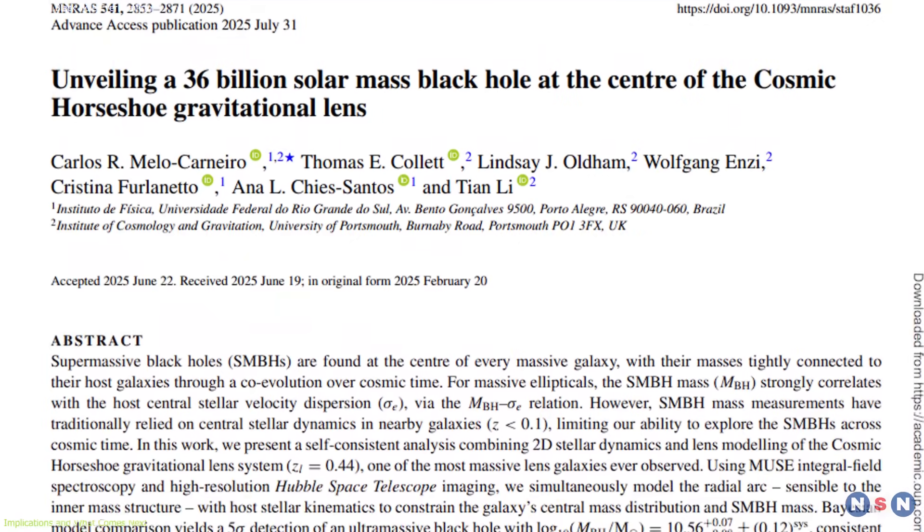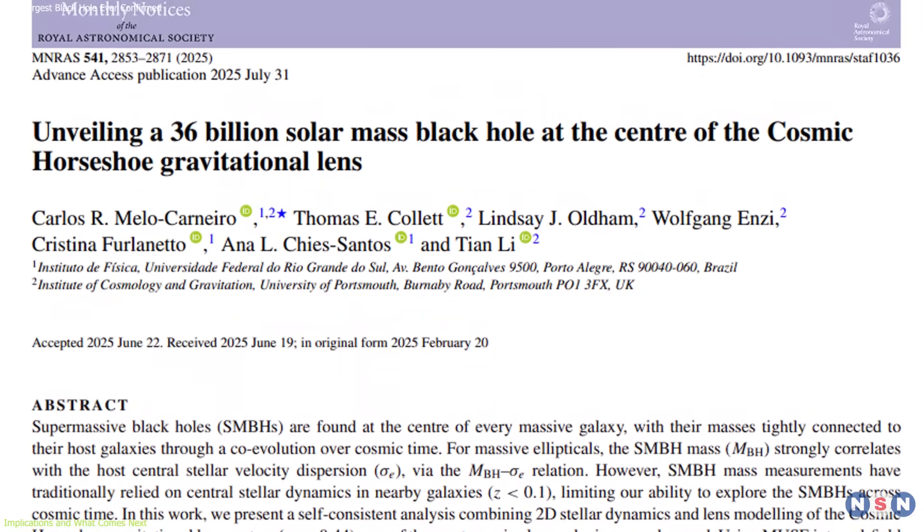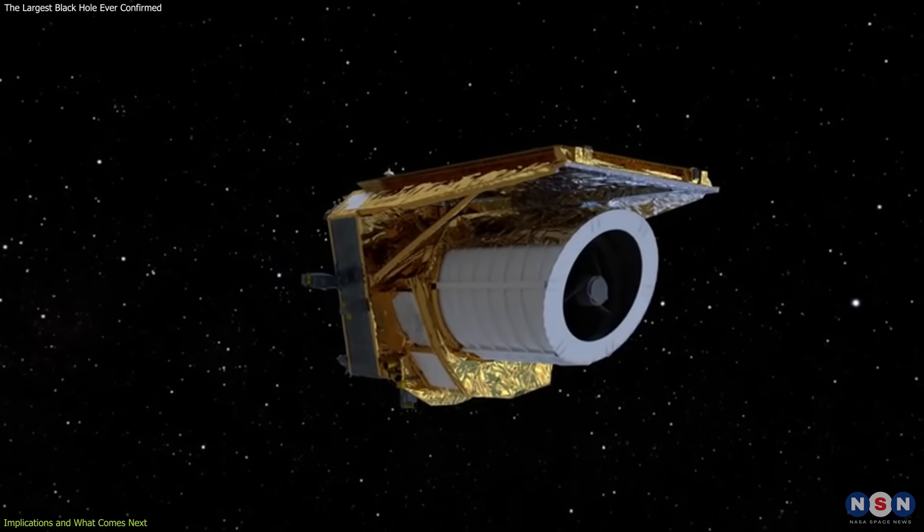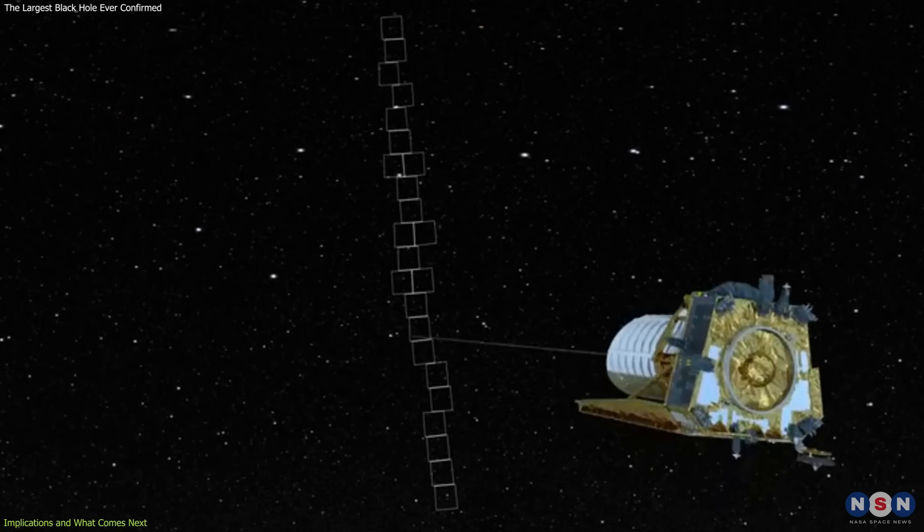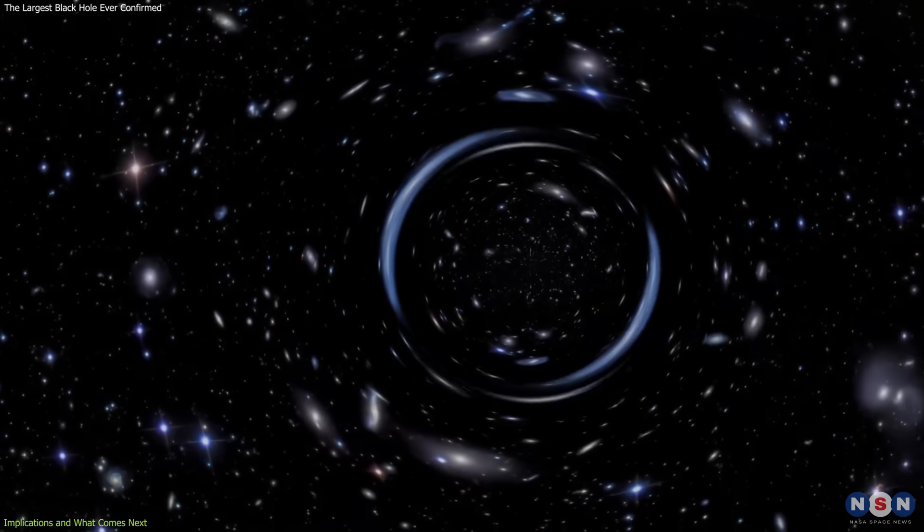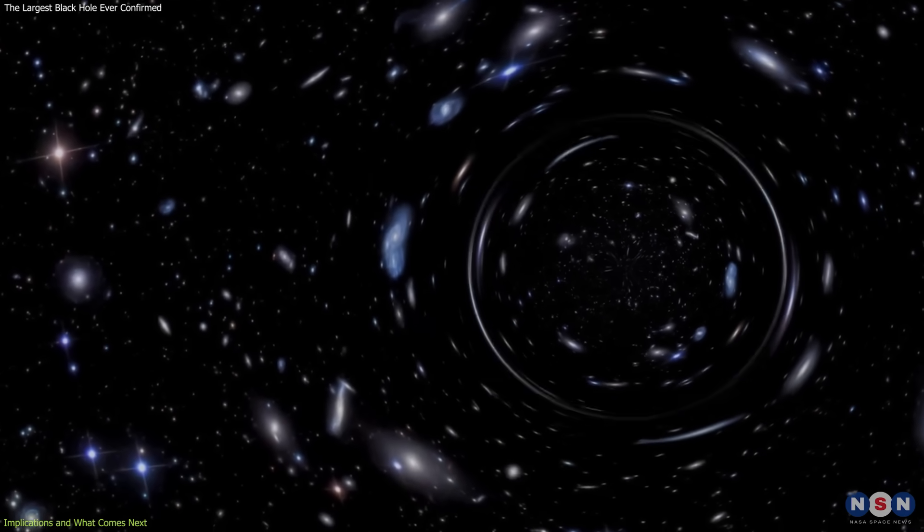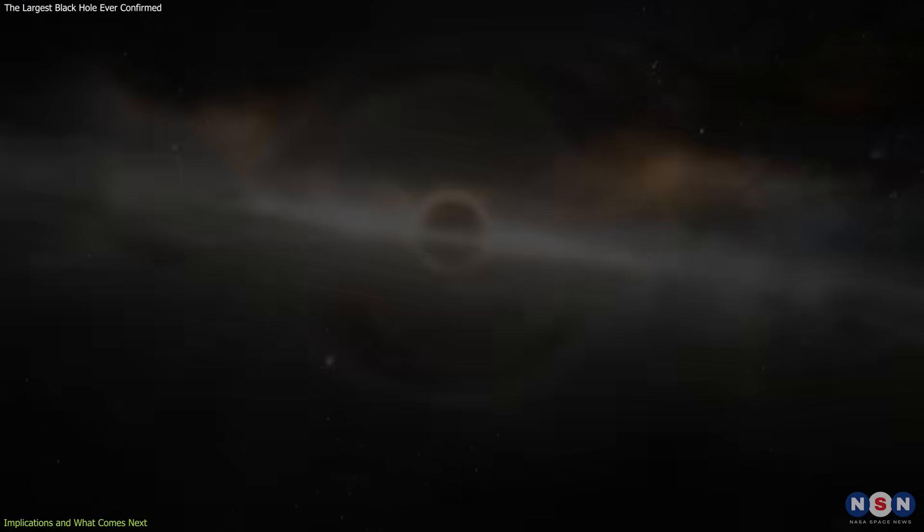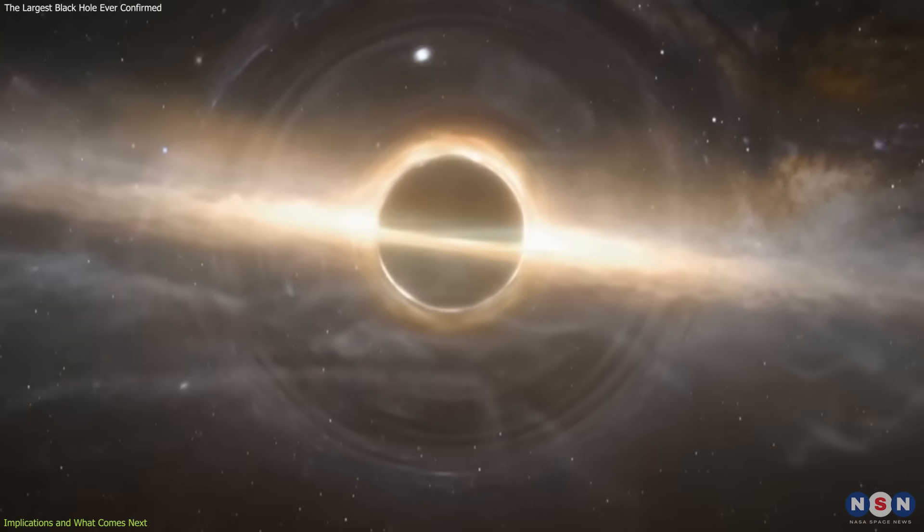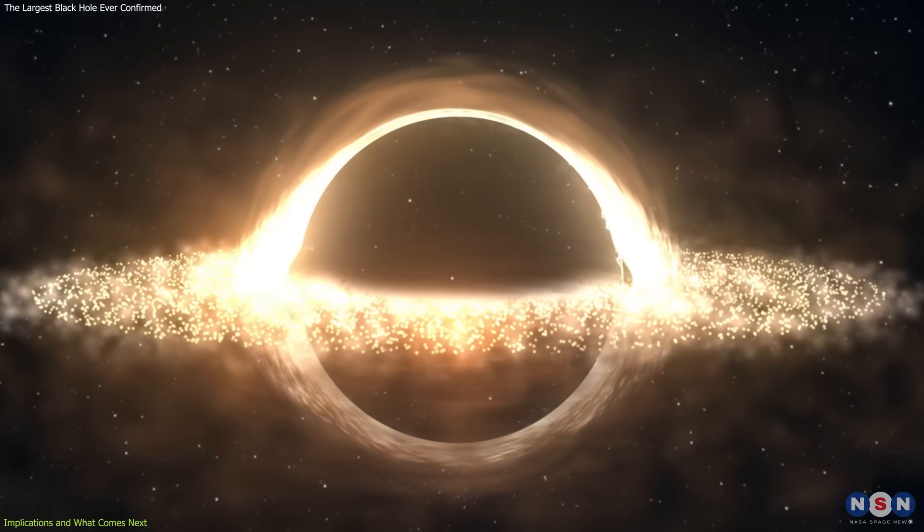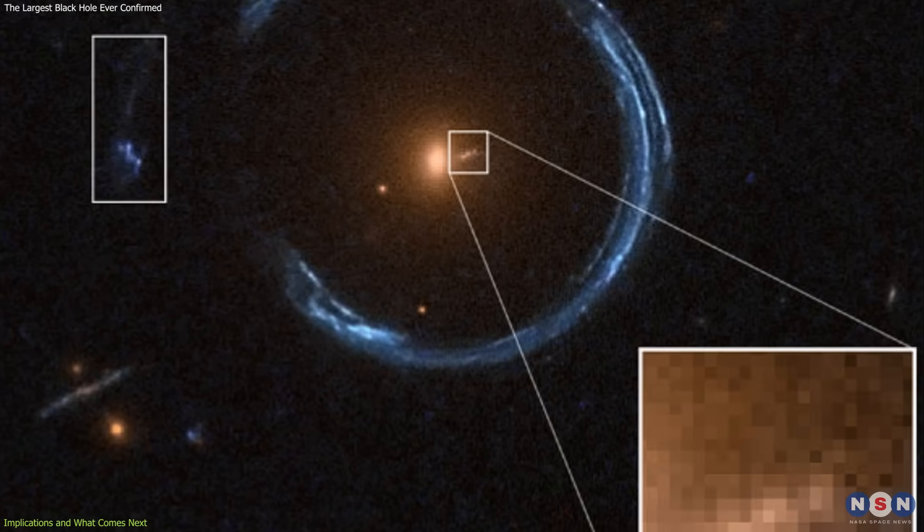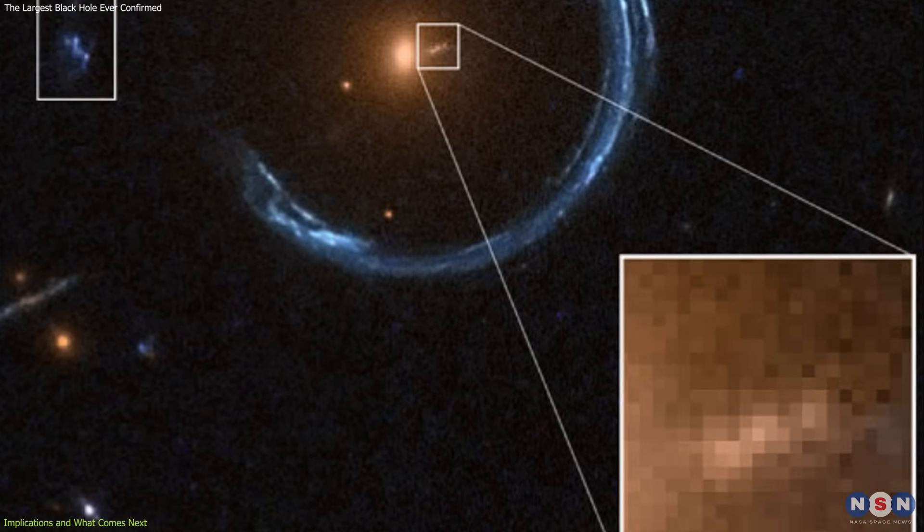Third, the discovery sets the stage for future surveys. The European Space Agency's Euclid mission, launched in 2023, is now mapping billions of galaxies and is expected to uncover thousands of new gravitational lenses. Systems like it could soon be studied in much greater numbers, allowing astronomers to identify a broader population of ultramassive them and determine whether the horseshoe is exceptional or part of a larger trend.